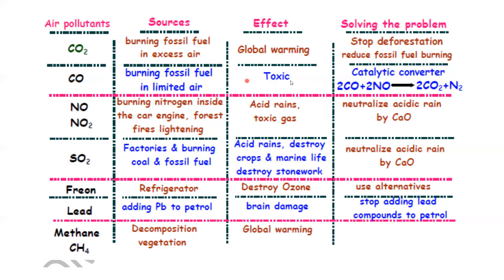Carbon monoxide can be treated using a catalytic converter, where it mixes with oxides of nitrogen and is turned into carbon dioxide. Oxides of nitrogen such as nitrogen monoxide and nitrogen dioxide are produced by burning inside the car engine, and also by forest fires and lightning during thunderstorms, where the high energy causes nitrogen to react with oxygen. These can cause acid rain, and can be neutralized by a base oxide such as calcium oxide.